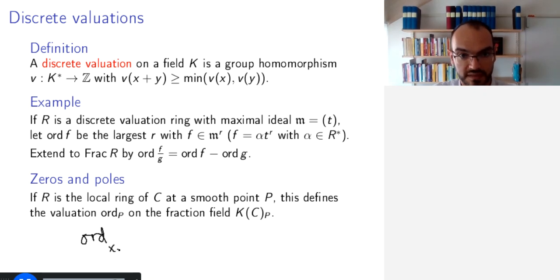So, for example, ord at x equals 0 of, say, x^6 divided by x minus 1 to the power of 7. Again, I am taking an affine example. Because x to the power of 6, I mean, these are regular functions on the affine line, so this will be 6.